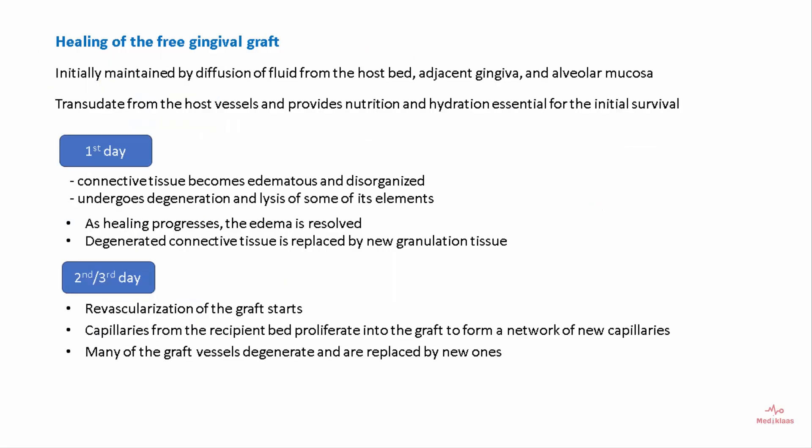Healing of the free gingival graft is initially maintained by diffusion of fluid from the host bed, adjacent gingiva, and alveolar mucosa. Transudate from the host vessels provides nutrition and hydration essential for graft survival. During the first day, the connective tissue bed becomes edematous and disorganized, undergoing degeneration and lysis of some elements. As healing progresses, edema resolves and degenerated connective tissue is replaced by new granulation tissue. During the second and third day, revascularization begins as capillaries from the recipient bed proliferate into the graft, and many graft vessels degenerate and are replaced by new ones.